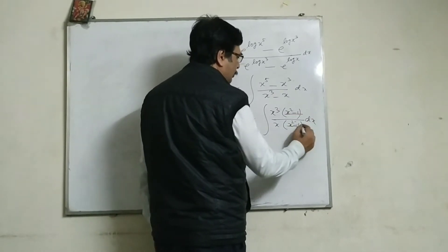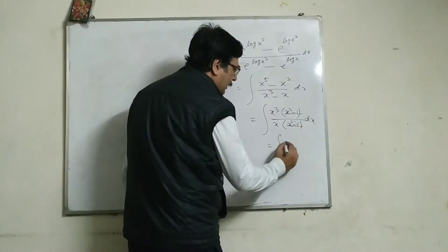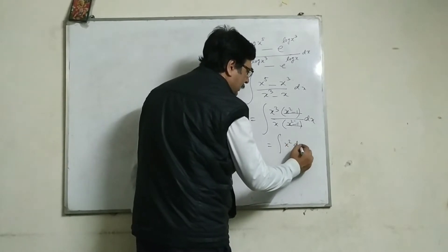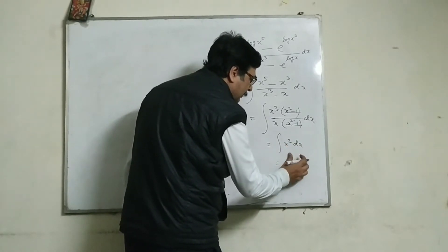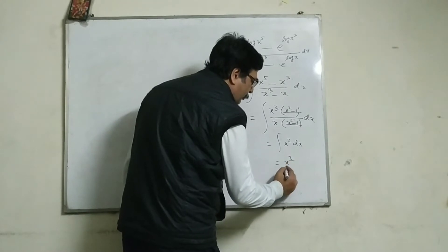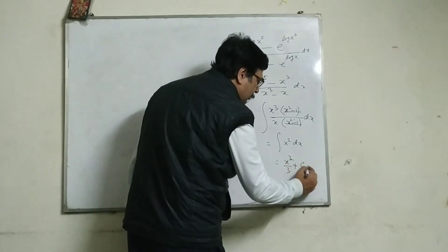So if I cancel these two, then it will be x square dx, and that is x cube by 3 plus c.